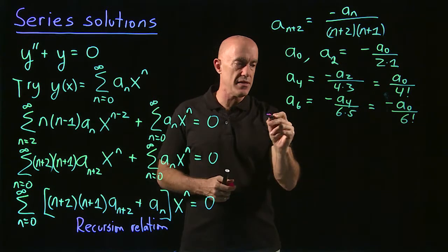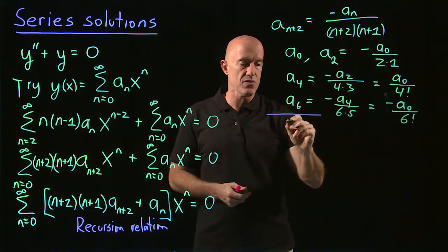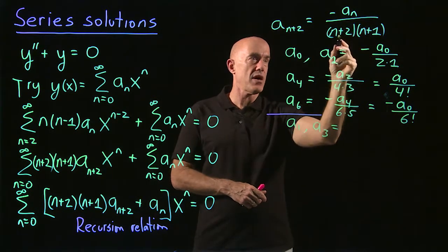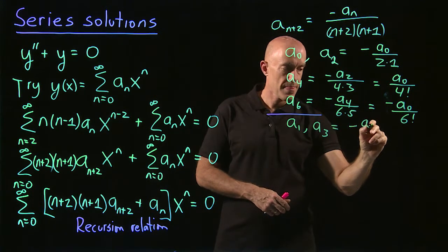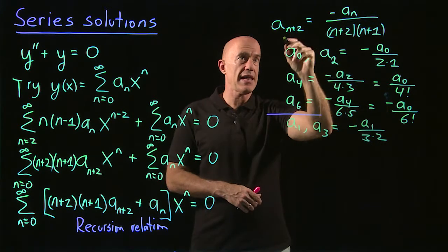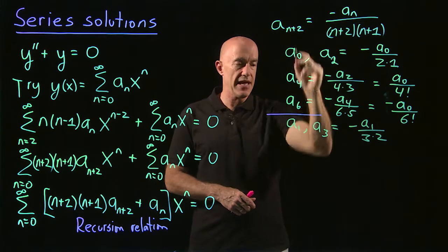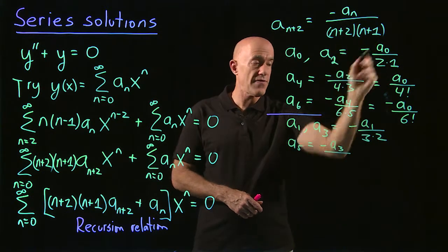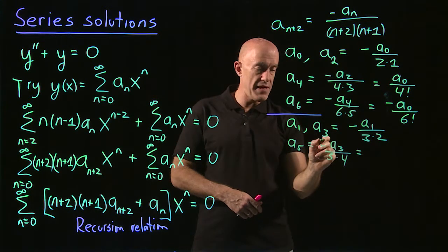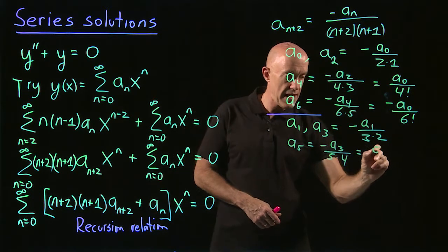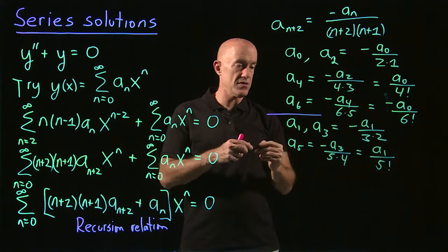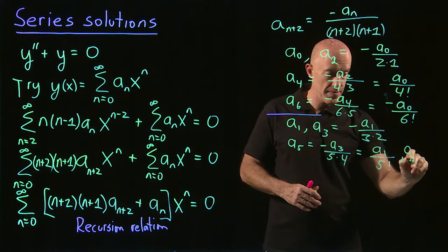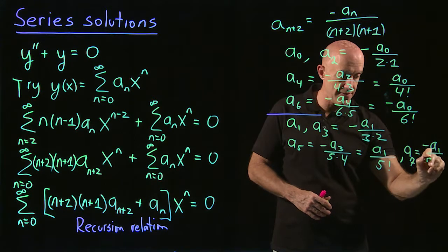The next sequence will be the odd ones. Starting with n equals 1, we get a3 equals minus a1 over 3 times 2. Then n equals 3 gives a5 equals minus a3 over 5 times 4, which equals plus a1 over 5 factorial. And a7 will simply be minus a1 over 7 factorial.